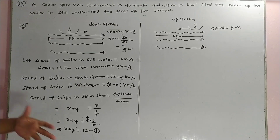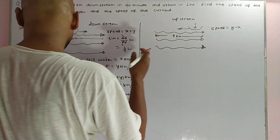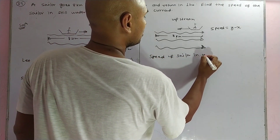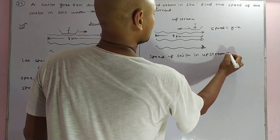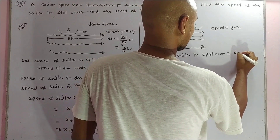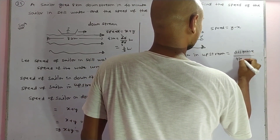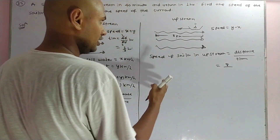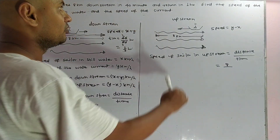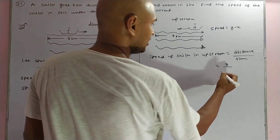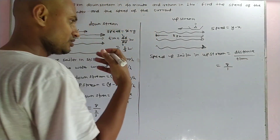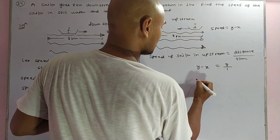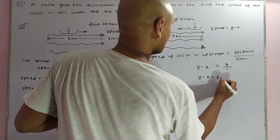For upstream: the speed of the sailor in upstream equals distance divided by time. The distance is 8 kilometers and the return time is 1 hour, so the speed equals 8 divided by 1 equals 8. The speed of the sailor in upstream is y minus x, so y minus x equals 8 — this is equation number 2.